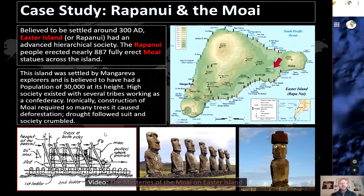One of the most interesting islands in the Pacific is Rapa Nui, also known as Easter Island, believed to have been settled around 300 AD. It had an advanced hierarchical society with a king and local lords. Over about 1,000 years, the Rapa Nui people erected nearly 887 fully erect Moai statues. Scholars today think Rapa Nui was settled by explorers from Mangareva and is believed to have had a population of 30,000 people at its height, with several tribes working together as a confederacy. The map here shows the location of Moai statues around the borders of Rapa Nui, with the red arrow pointing to the quarry where statues were made.